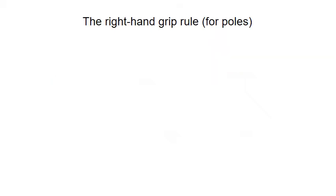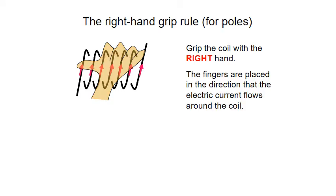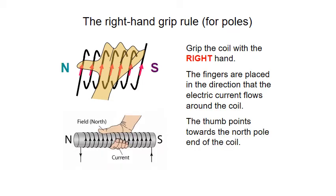We also have a right-hand grip rule, this time for poles in terms of magnets, because the solenoid has a polarity — it essentially behaves like a bar magnet. We grip the solenoid coil with the right hand, and the fingers are placed in the direction of the electrical current flowing around the coil. The thumb this time points towards the north pole of the solenoid, which is now behaving like a bar magnet, as the current goes around the solenoid.